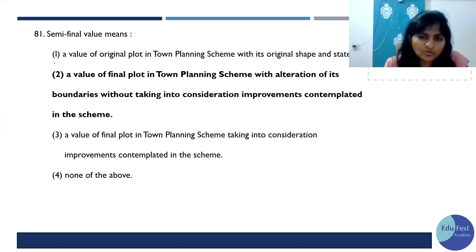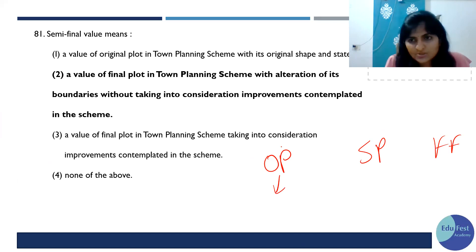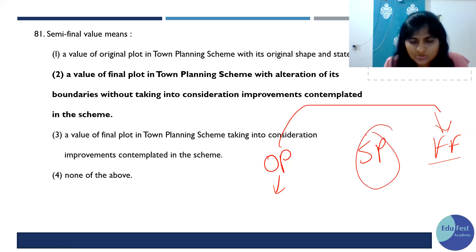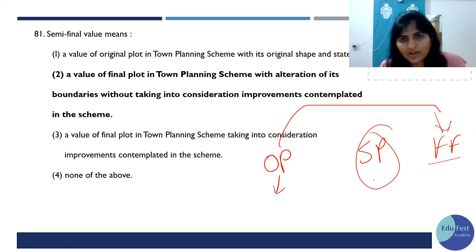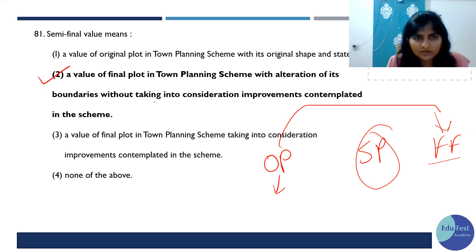Next: semi-final value. There are three values — Original Plot (OP), Semi-final Plot, and Final Plot. The original plot is what was there originally. The final plot is what is returned to the owner. But without improvements, that value is the semi-final plot. So the semi-final value is the value after only the boundary has been altered, without taking improvements into consideration. The answer is 2, that is B.